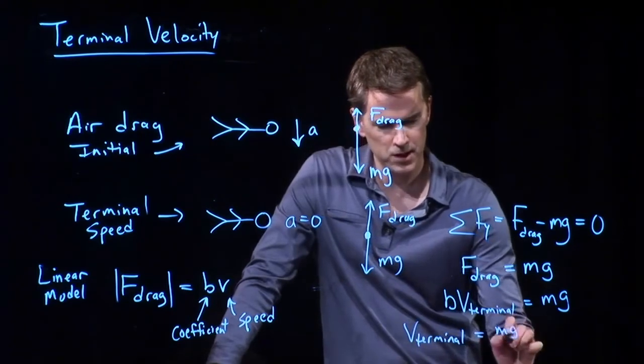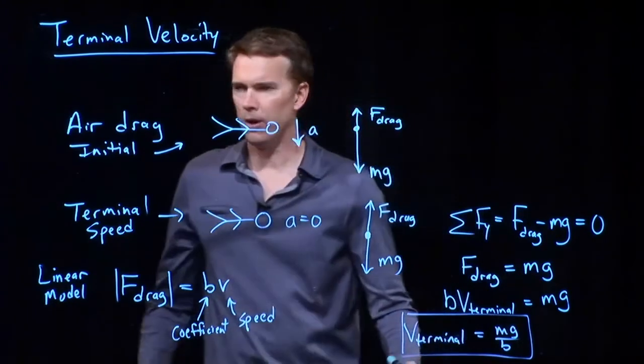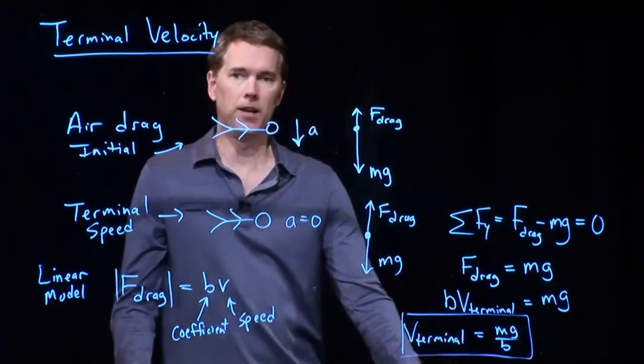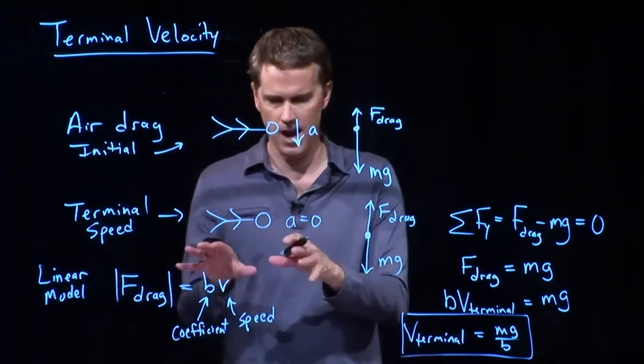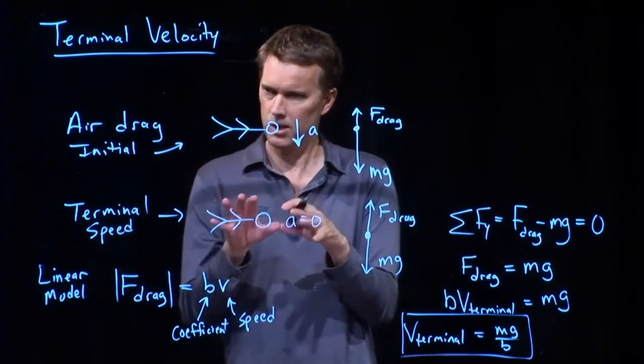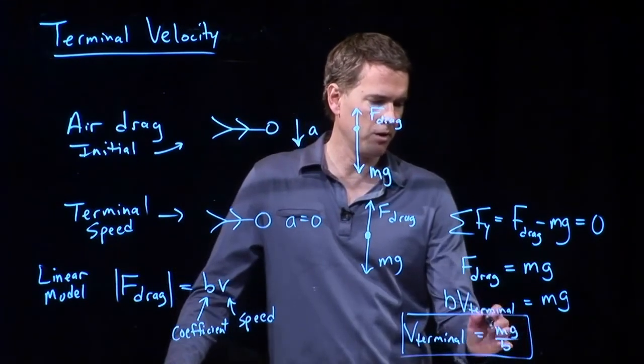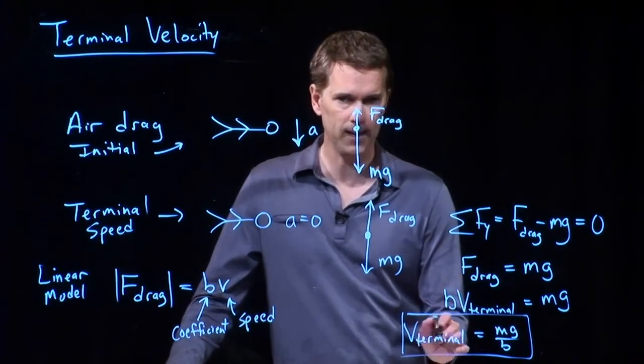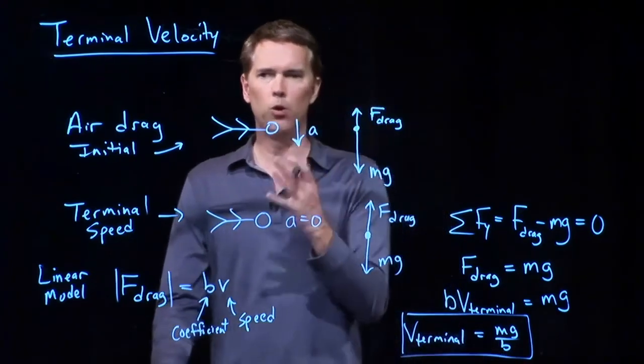We don't know exactly what this B coefficient is, but that depends on a lot of things, like the cross-sectional area, the density of the air, whether you are wearing floppy clothing or tight clothing, all sorts of things like that. And if you increase your gravitational force, you can increase the terminal speed if you don't change B. And you guys kind of know this already.